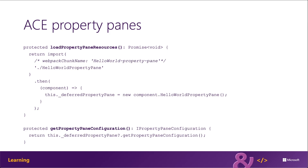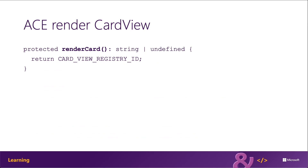For example, just like a viewer of the ACE, the property pane is only accessible to editors on the site. Finally, the renderCard method, similar to the web part's render method, returns the ID of the card view that should be used to render the ACE. In the default code generated when creating a new project, this is listed as a constant.